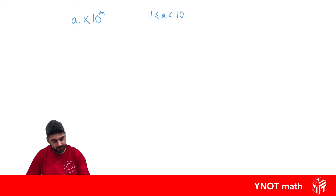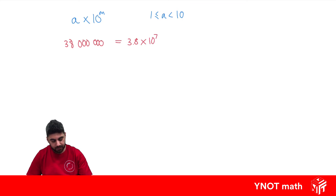Let's have a look at an example. If we have 38 million, in scientific notation it's going to look like 3.8 times 10 to the power of 7. And for a small number like 0.000489, that's going to look like 4.89 times 10 to the power of minus 4.